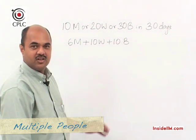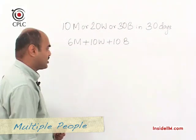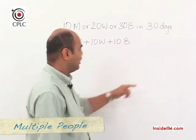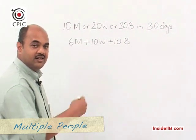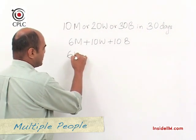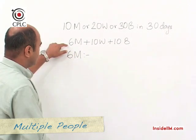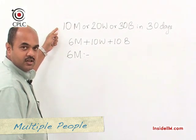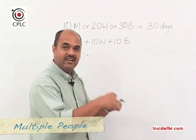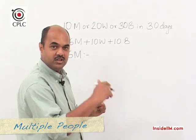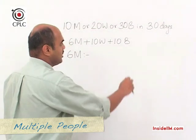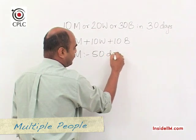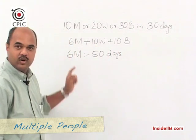Let's look at our first method. If 10 men can complete the work in 30 days, how many days will 6 men need? Since the number of men becomes 3/5 of the original, the time taken becomes 5/3 of the original — based on the inverse relationship. So 5/3 of 30 gives us 50 days needed for 6 men.